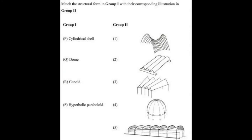Next question: match the structural form in Group 1 with their corresponding illustration in Group 2. Group 1: cylindrical shell, dome, conoid, hyperbolic paraboloid. The correct option is P2 — option 2 is an example of a cylindrical shell. Q4 — the dome corresponds to diagram 4. R5 — the conoid looks like the 5th diagram in Group 2. S1 — the hyperbolic paraboloid corresponds to structure 1 in Group 2.